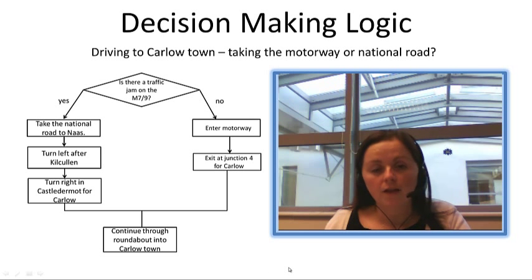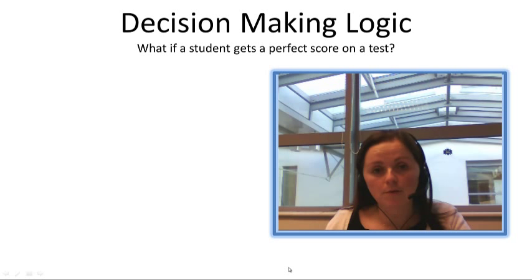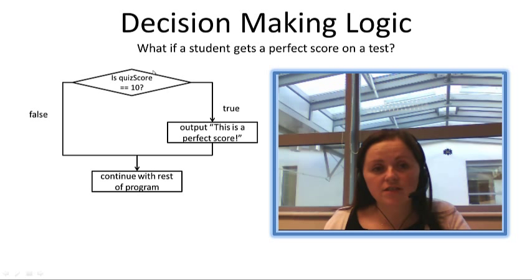If we take a look at an even simpler example, what if a student gets a perfect score on a test? We may want to print a message telling them they got a perfect score. Here our decision is, is the quiz score equal to 10? If it is, we output 'this is a perfect score' and then continue with the rest of the program.